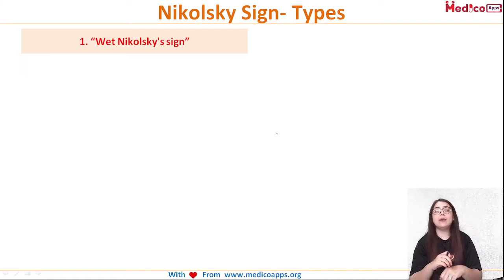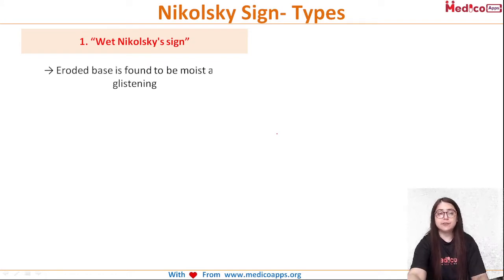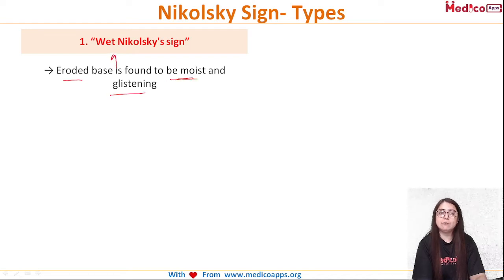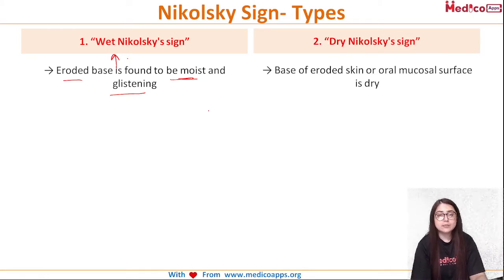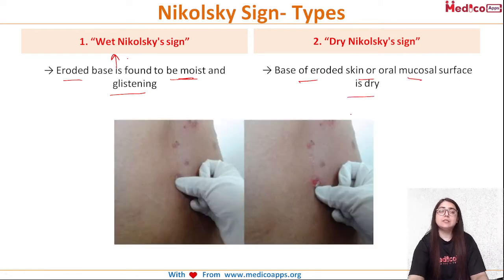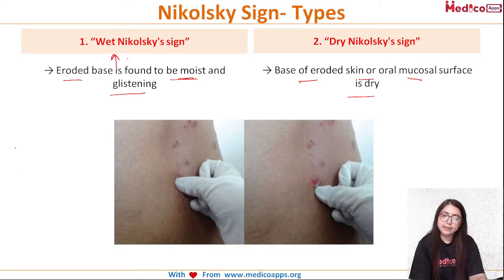In wet Nikolski sign, when the upper layer is removed, the base is moist — the eroded base is found to be moist and glistening, hence the name 'wet.' In dry Nikolski sign, the base of the eroded skin or oral mucosal surface is dry.